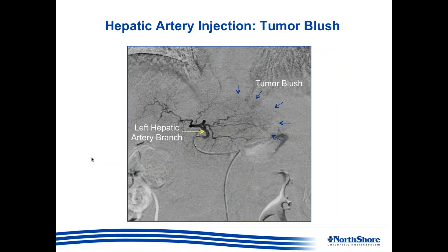As part of the mapping angiogram, we also performed selective catheterization and imaging of the branches of the left hepatic artery. As you can see here with super-selective catheterization and injection of dye, there is evidence of a tumor blush as delineated by these arrows.